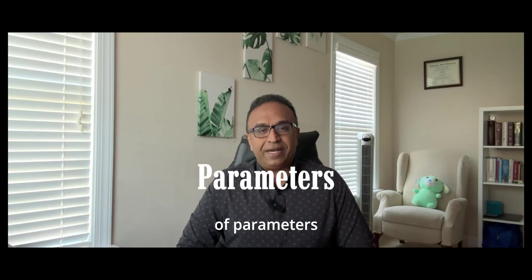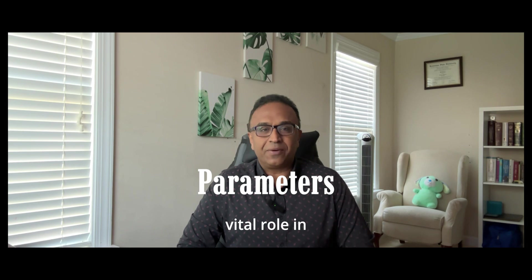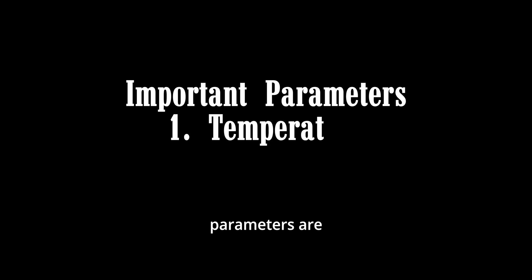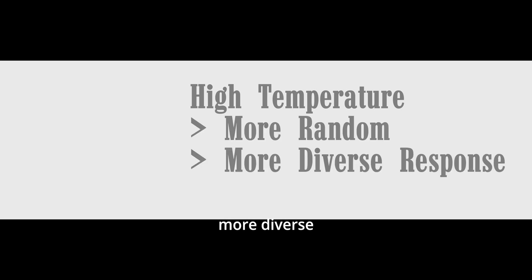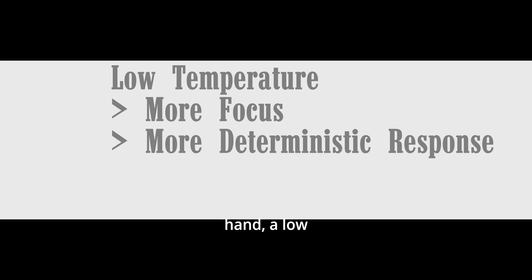ChatGPT offers a range of parameters that play a vital role in controlling how the output is generated. Two particularly fascinating parameters are temperature and top-k sampling. The temperature parameter influences the randomness of the model's output. A higher temperature, such as 0.8, introduces randomness, leading to more diverse responses. On the other hand, a low temperature, such as 0.2, produces more focused and deterministic responses from the model.